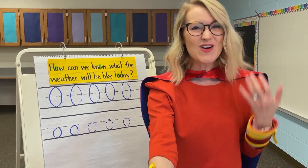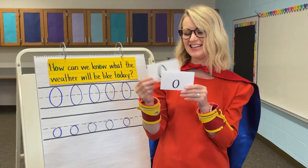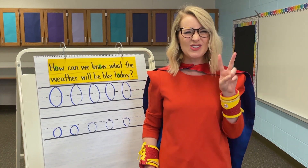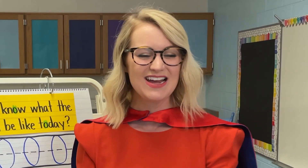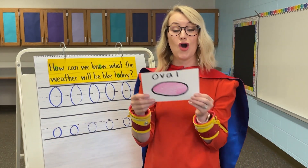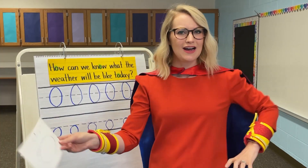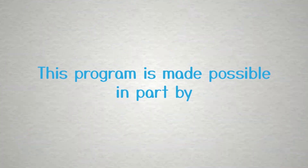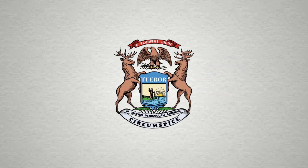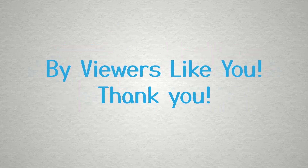Great work today — you're a letter O hero! Remember, we learned the uppercase letter O and the lowercase letter O. And remember, O can make two sounds. It can make the short sound like in the word octopus — ah, ah, octopus. Or it can make the long sound like in the word oval — oh, oh, oval. Nice work! Look around your house and see if you can find the letter O anywhere. This program is made possible in part by the Michigan Department of Education, the State of Michigan, and the W.K. Kellogg Foundation. Additional support by viewers like you. Thank you.